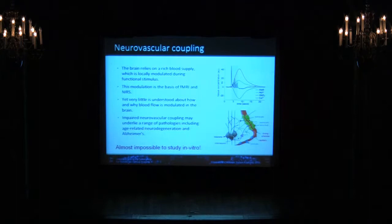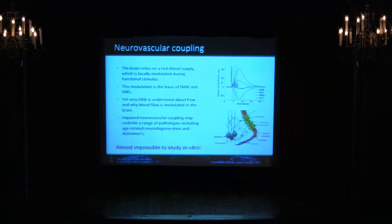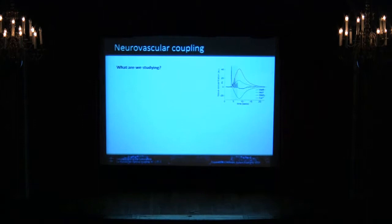One reason it has taken a while is that people didn't really care about blood flow until fMRI. But secondly, this is really difficult to study in vitro. Once you do a brain slice, you've cut away the central nervous system, the circulatory system, and you don't have pressurized blood flow. So we force ourselves to study this in vivo, in the intact living brain, which presents problems in trying to get information out without causing disruption to blood flow or neuronal activity.